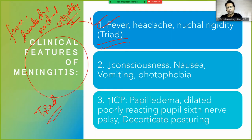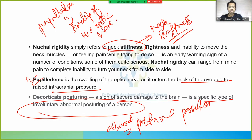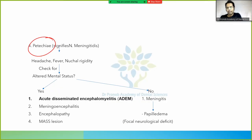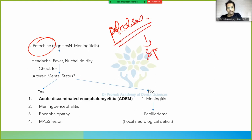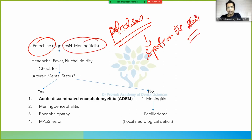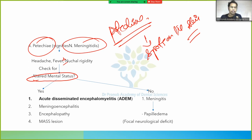In the diagnostic approach: if a patient has headache, fever, and nuchal rigidity, check whether there is altered mental status. If altered mental status is present, even with these three signs, the diagnosis may be different — possibilities include ADEM (Acute Disseminated Encephalomyelitis), meningoencephalitis, or encephalopathy.